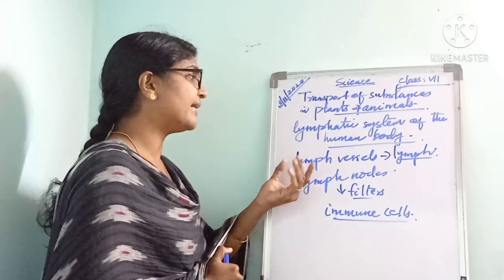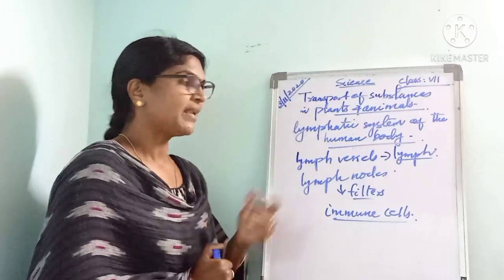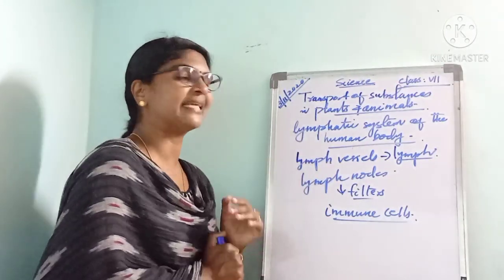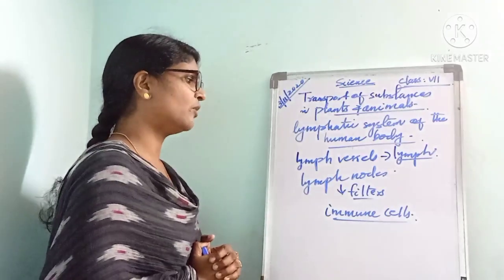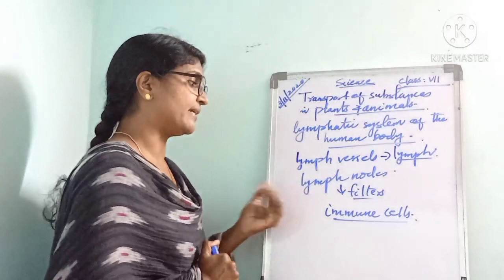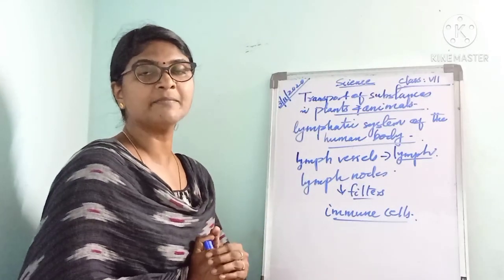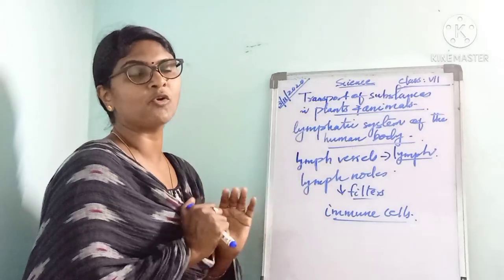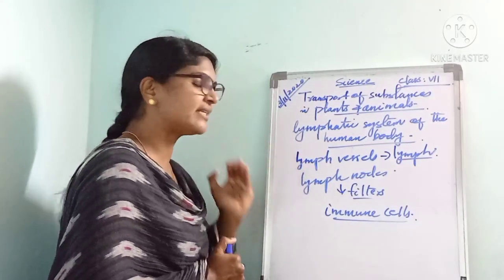The lymphatic system is a subsystem of the human circulatory system, consisting of lymph vessels and lymph nodes. There are hundreds of lymph nodes situated throughout our body, and most are situated near the head and neck.